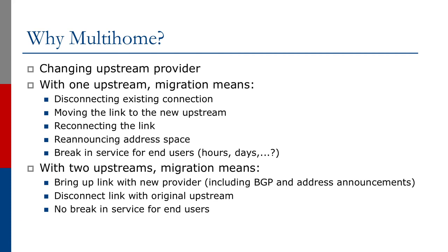Another reason for multi-homing that not many people think about is changing upstream providers. If you've got one upstream provider and you want to move to another one, it's actually quite an involved process. You have to disconnect your existing connection, move the link to the new upstream provider, reconnect the link, re-announce the address space, and hope that it all works. How long will this take? A matter of seconds? Unlikely. Minutes? Hours? Days? It's certainly not going to be a seamless switchover your end users won't notice. In my experience, a lot of these upstream changes can take days, if not weeks, to achieve.